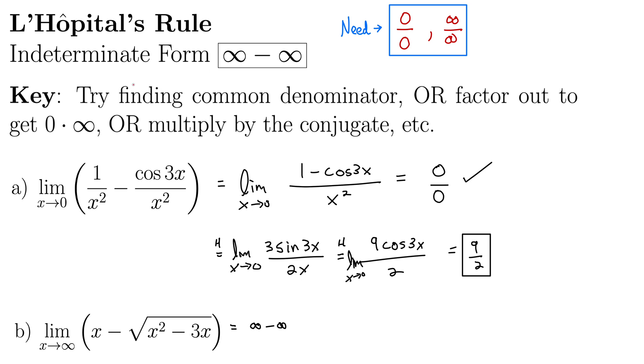So we need to do some more work. Looking back at our key, we can't find the common denominator because there's no denominators. The conjugate trick doesn't actually work in this case. I recommend the conjugate trick if you're dealing with a square root minus a square root. But this is not that. Since we just have an x here and not a square root of x, I'm going to try this middle approach here to factor out to get the form 0 times infinity.